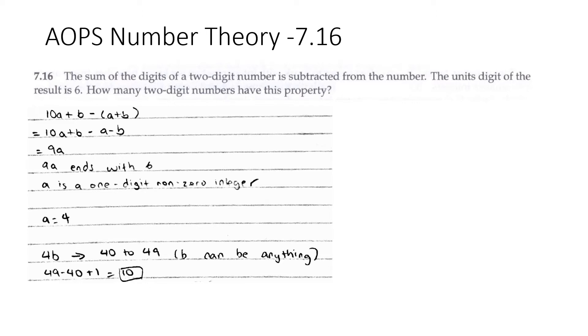The sum of the digits of a two-digit number is subtracted from the number. The units digit of the result is 6. How many two-digit numbers have this property?